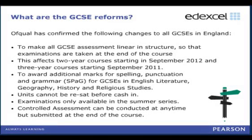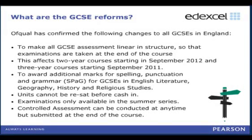The third bullet isn't really applicable to language GCSEs because it relates to English language additional marks for spelling, punctuation and grammar, which only affects a limited number of GCSE subjects. The next bullet states that units cannot be resat before cash-in. If a student wants a GCSE qualification in Japanese, Arabic, Russian or Greek, they have to sit all four units together at the end of their GCSE course and cannot sit individual units separately as they can currently.